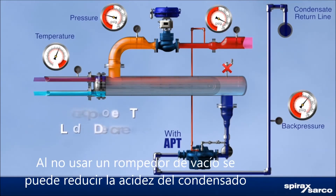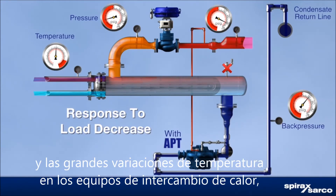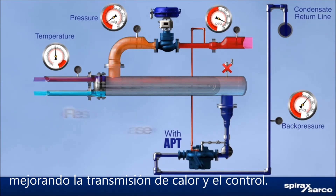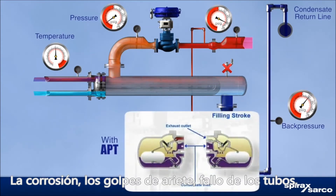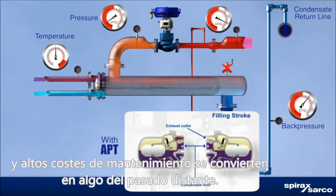By not using a vacuum breaker, you can reduce condensate acidity and large temperature swings in the heat exchange equipment. Heat transfer and control improve. Corrosion, water hammer, tube failure, excessive treatment chemical dosing, and high maintenance costs become distant memories.